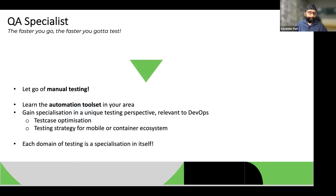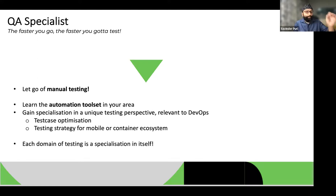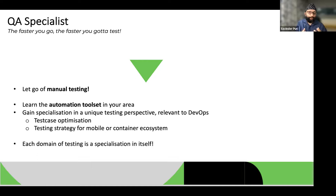For QA specialists: the faster you go with DevOps, the more important your role becomes. First word of advice — if you're still doing manual testing today, get out of it as soon as possible unless you're in a super niche area where it's the only way forward. Move into automated testing. Within that, pick a niche — for example, learn about test case optimization: out of 500 test cases, how do you select the 20 that give maximum coverage? Or pick up a testing strategy for mobile or container ecosystems.